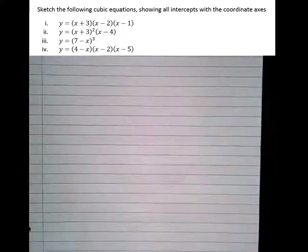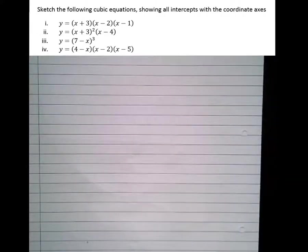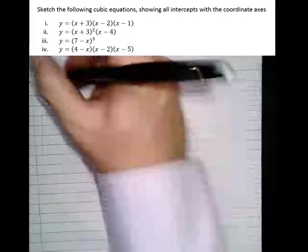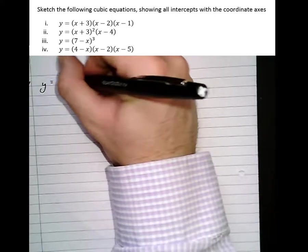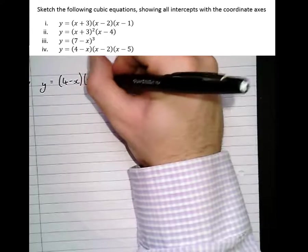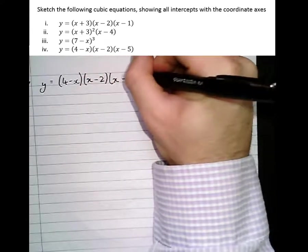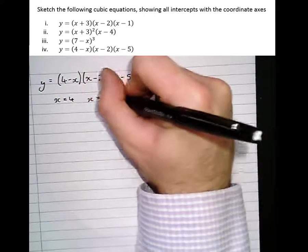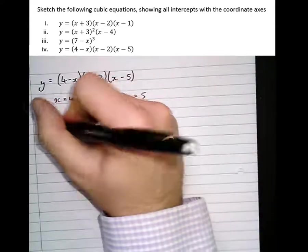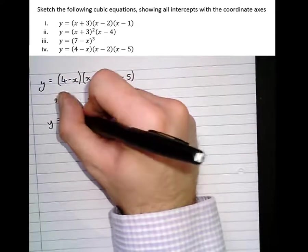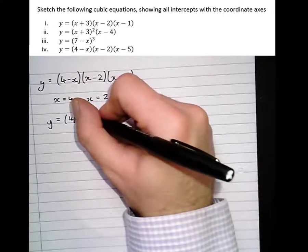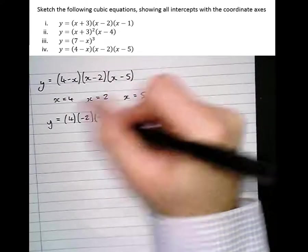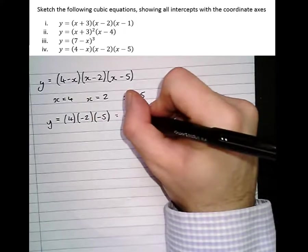We get Y equals (4 - X)(X - 2)(X - 5). So the roots are at X equals 4, X equals 2, and X equals 5. The Y-intercept, when X equals 0, is (4 - 0)(0 - 2)(0 - 5). So 4 times minus 2 is minus 8, times minus 5 is 40.